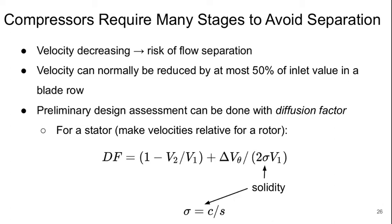As was already mentioned, compressors require many stages to avoid flow separation. The velocity is decreasing, so we always have a risk of flow separation. The typical upper limit is that you can't really reduce the velocity by more than 50% of the inlet value in one blade row.